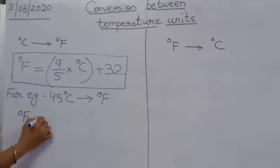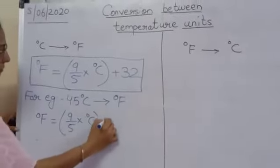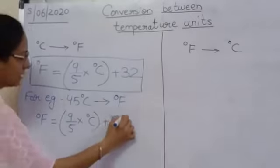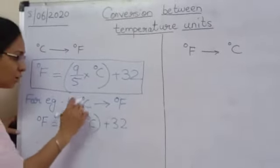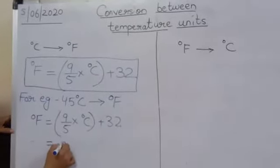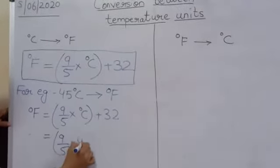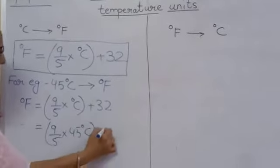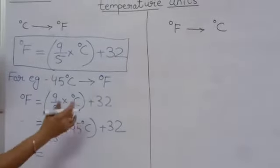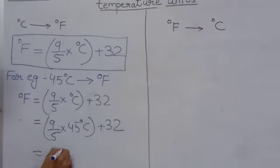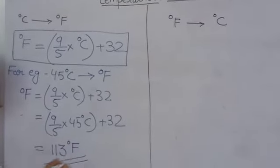First, we will write the formula. Now, instead of degree Celsius, we will be putting the value which has to be changed: 9 by 5 multiplied by 45 degree Celsius, plus 32. After calculating, you will be getting the answer 113 degree Fahrenheit.